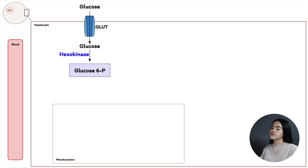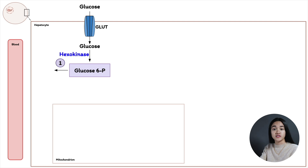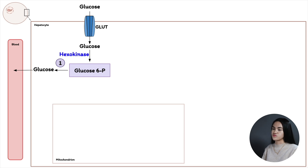Glucose-6-phosphate plays an important role in metabolism, having various possible fates depending on the cell's metabolic requirements. Glucose-6-phosphatase, an enzyme found only in the liver, can dephosphorylate glucose-6-phosphate — removing that phosphate group from that 6-carbon — hydrolyzing it to yield free glucose. Glucose can then be transported to the blood to maintain blood glucose levels, which is crucial for the brain and other extra-hepatic tissues.